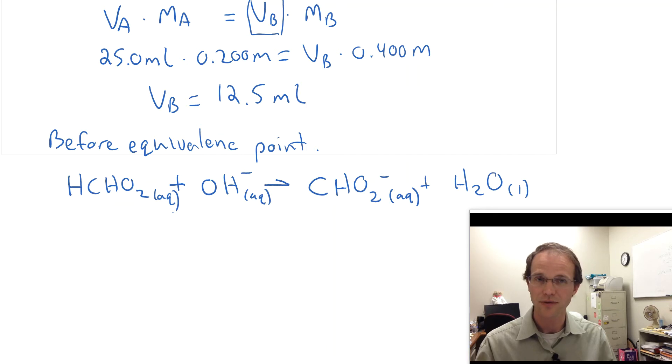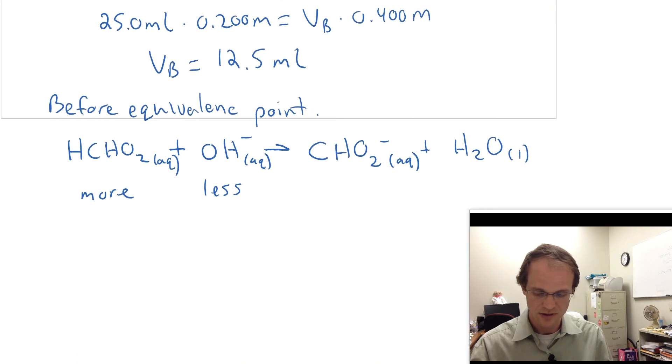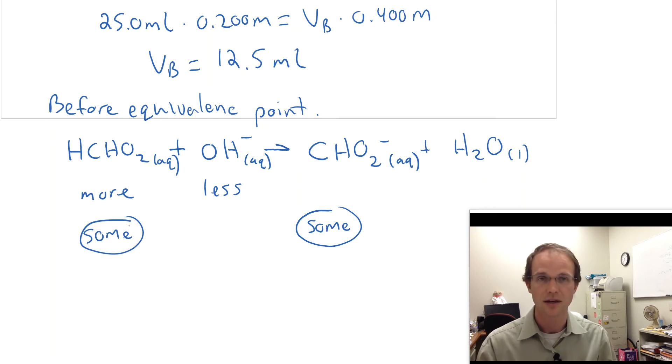So, since we're before the equivalence point, what that means is we have not added as much OH- as we have of the acid. We have more of the acid than we have of the OH-. So that means even when this reaction runs completely, OH- is our limiting reactant, which means we will be making some of this after the reaction, and there will still be some of this present. So what do we have? We have a solution that contains some acid and some of its conjugate. Well, that's the definition of a buffer, and so we're going to be able to solve this problem using the Henderson-Hasselbalch equation, because we know we have a buffer present.